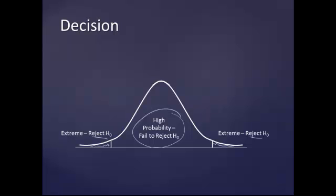But if we find something in this middle area that occurs with high probability, we're going to fail to reject the null hypothesis. The null hypothesis usually states that whatever value we're looking for is somewhere in that middle region. So if we find something that occurs here in the extremes, we're going to reject the null hypothesis.